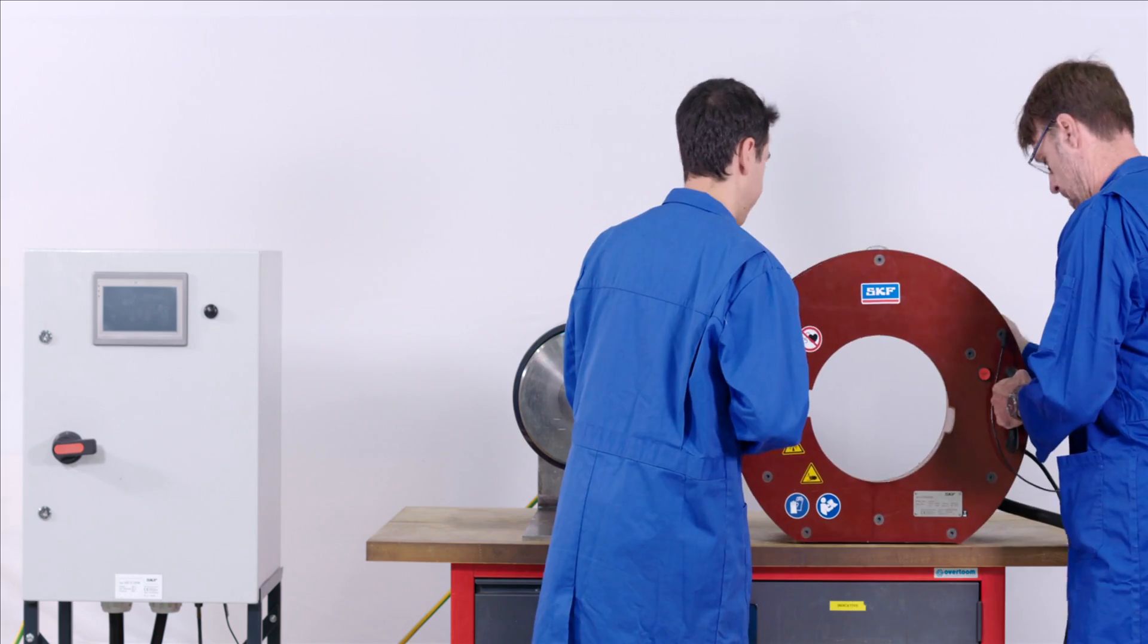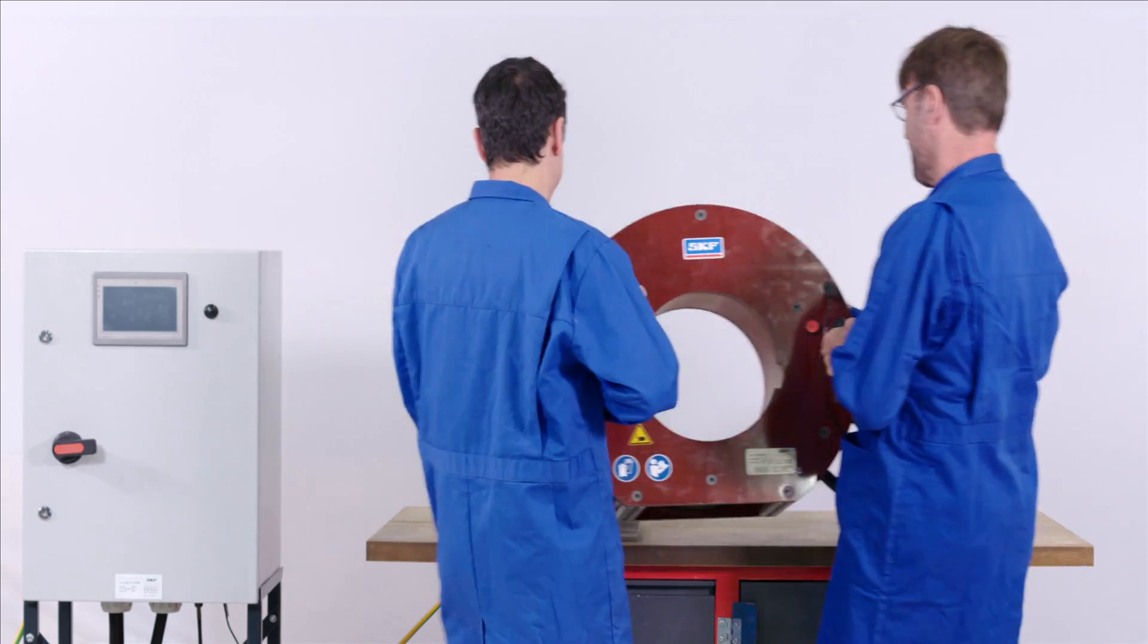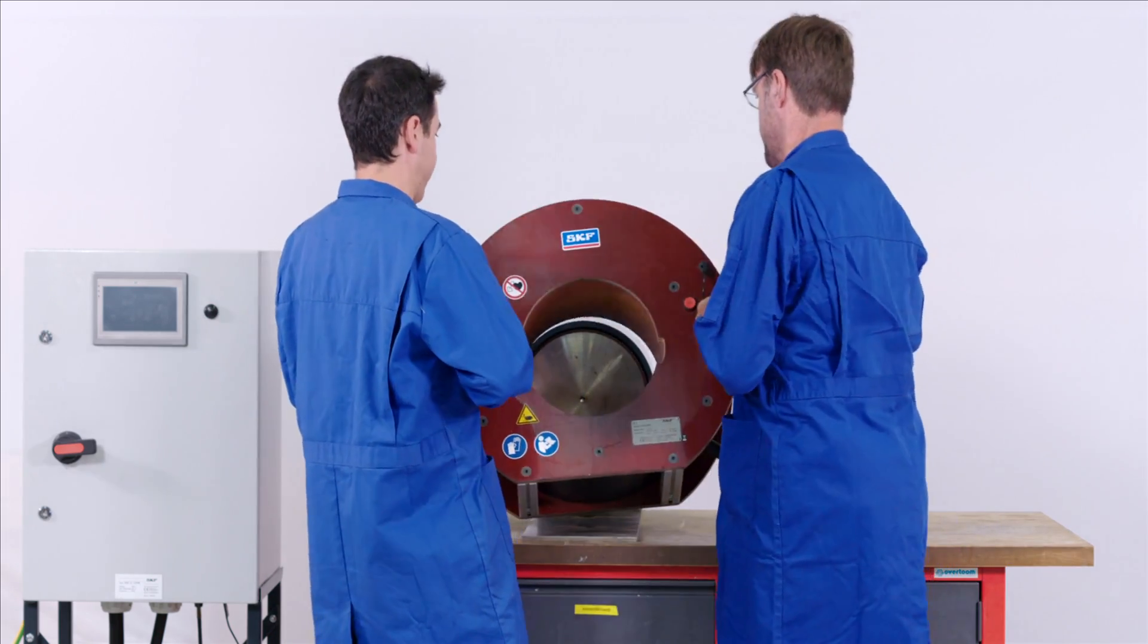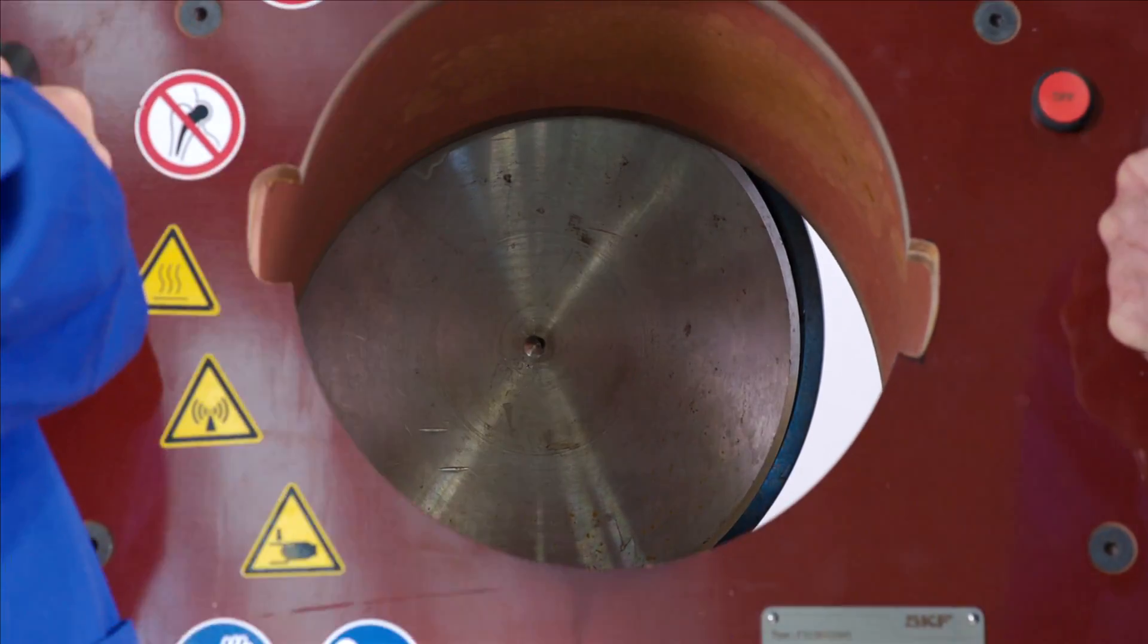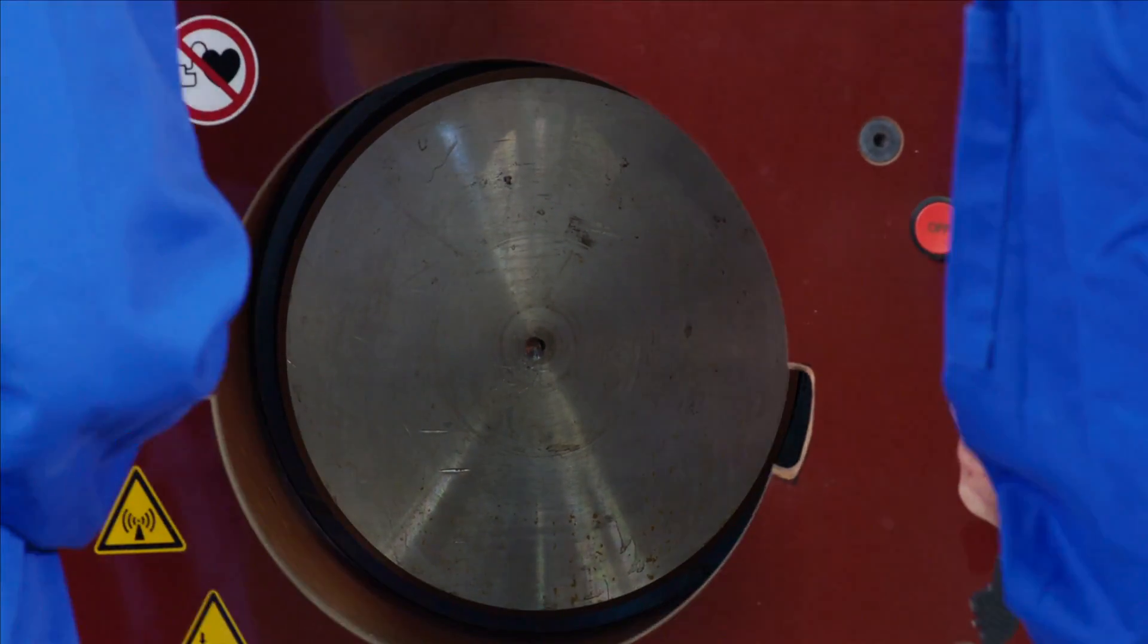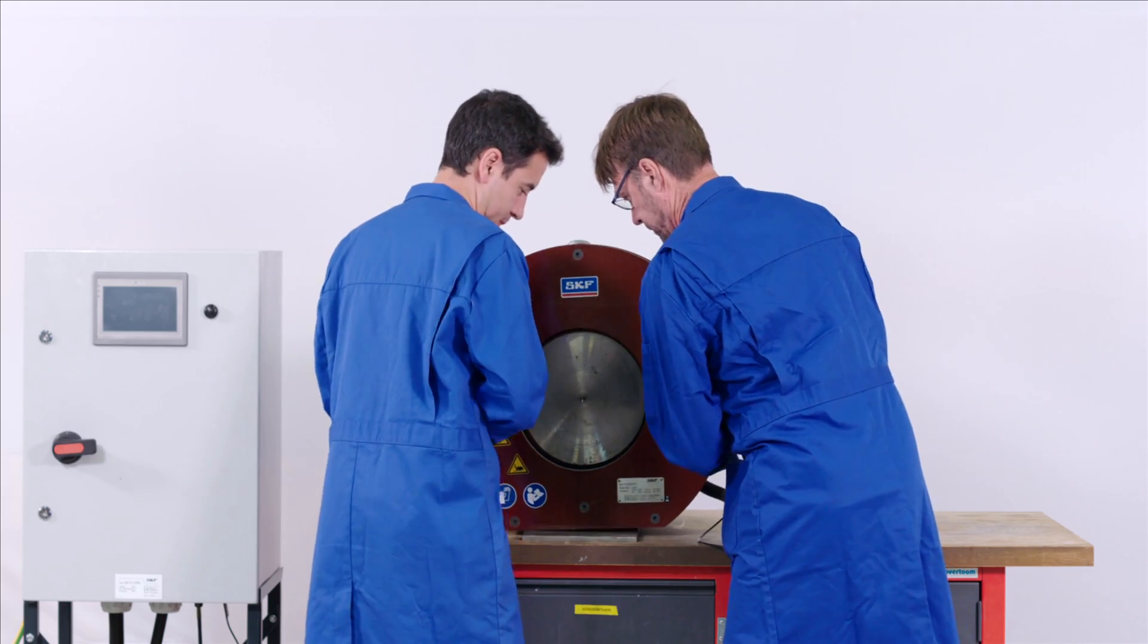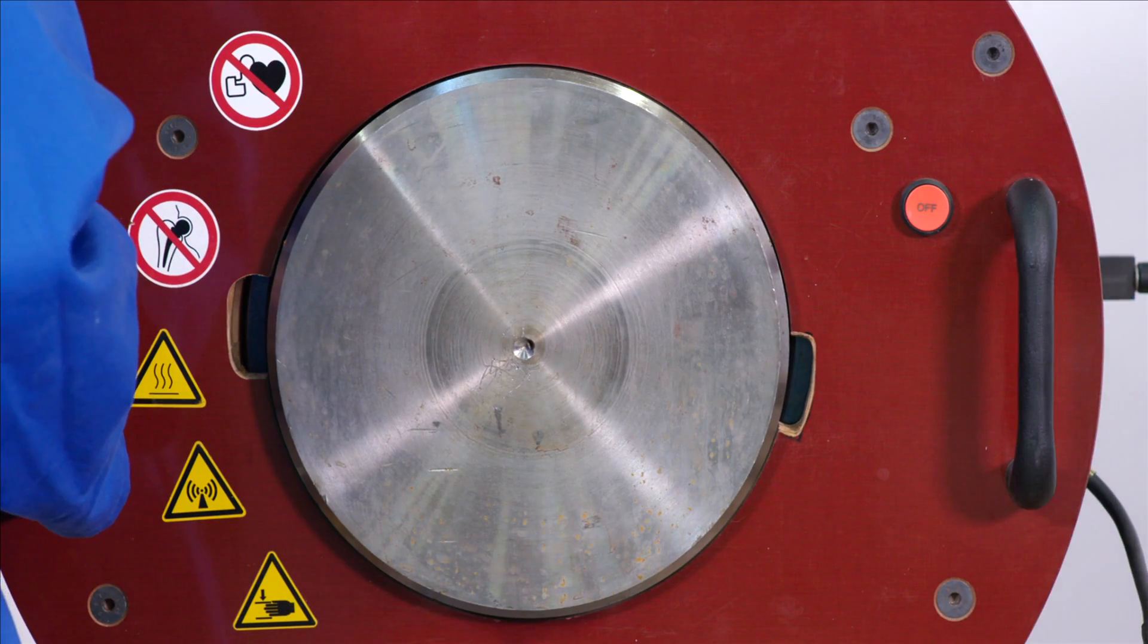Now we can start to use the EAZ. First, place the EAZ heater over the inner ring of the bearing that you want to dismount. If a crane or hoist is used, use fabric ropes only.